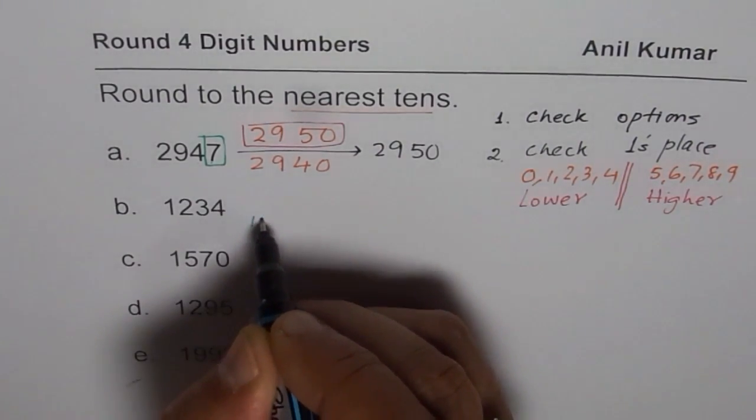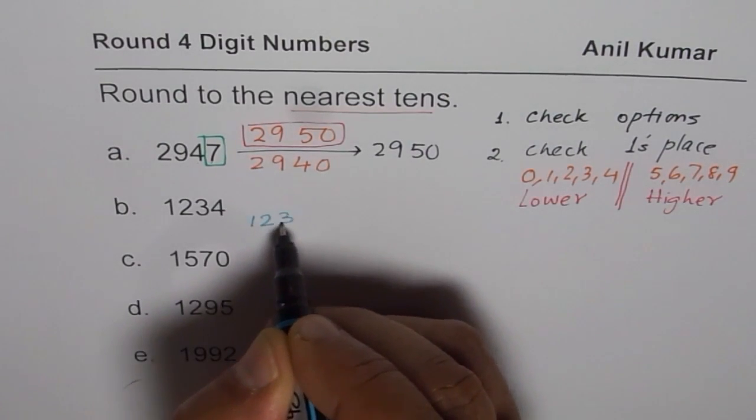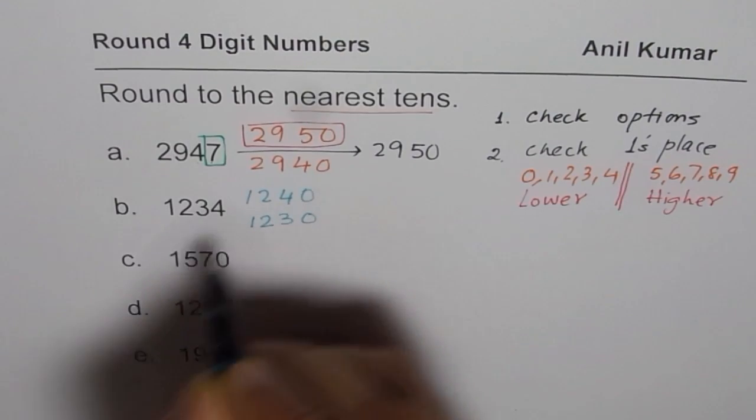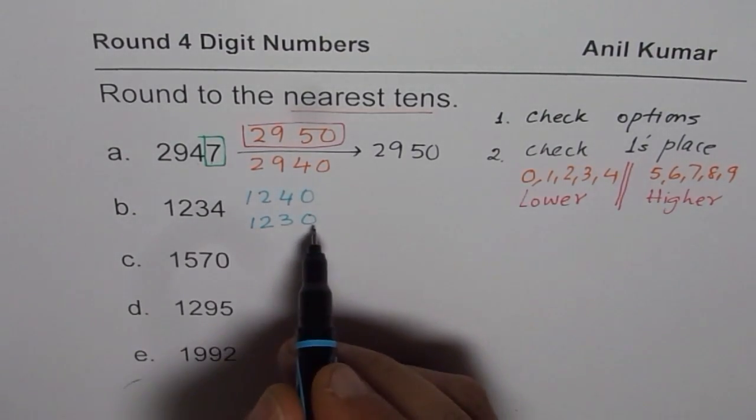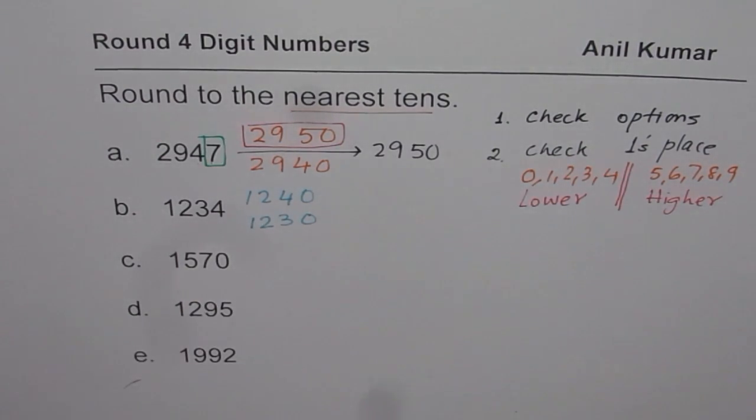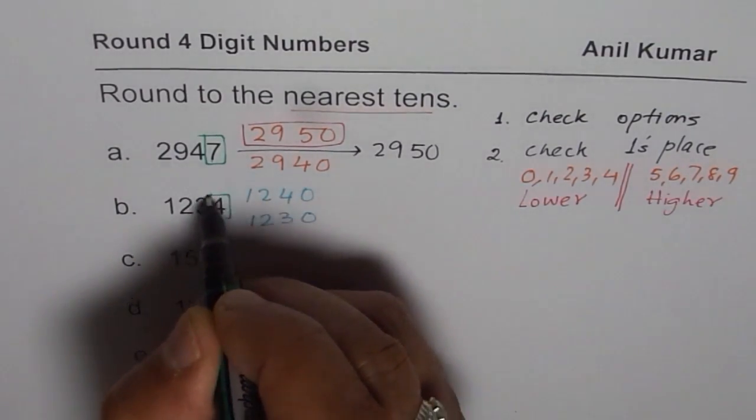Nearest tens numbers for this is 1, 2, 3, 0, or 1, 2, 4, 0. So 1, 2, 3, 4 is between 1, 2, 3, 0, and 1, 2, 4, 0. So the next step should be, check the number in ones place. It is 4.